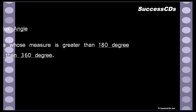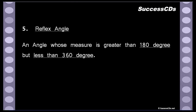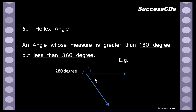Reflex angles are very important because students generally forget what they are. An angle whose measure is greater than 180 degrees but less than 360 degrees is a reflex angle. There are two constraints: greater than 180 and less than 360 degrees. Now here, there are two arms — we are not making the small angle between the two arms.